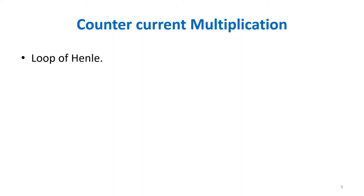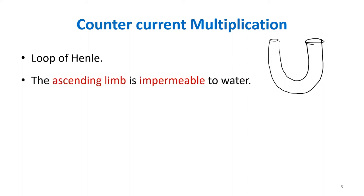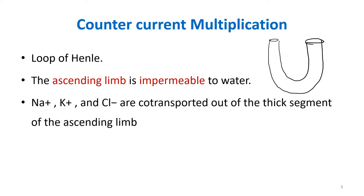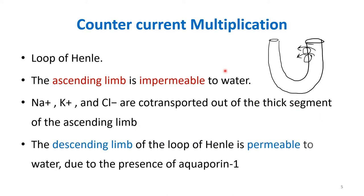After writing that basic outline, we can write about countercurrent multiplication. It begins in the loop of Henle, especially of the juxtamedullary nephrons, because of its special anatomical characteristics. The loop of Henle has a thin descending limb and a thick ascending limb. The thick ascending limb is impermeable to water but permeable to solutes. There are transporters on the thick ascending limb — the sodium-potassium-2-chloride co-transporter — which transport solutes from the thick ascending limb into the interstitium. The thin descending limb is permeable to water due to the presence of aquaporin, so water can freely move out into the interstitium.